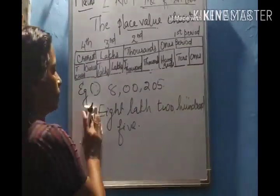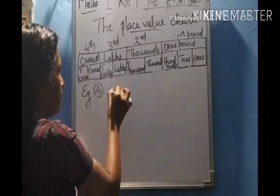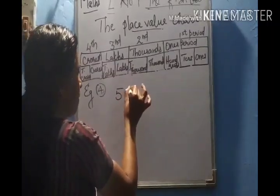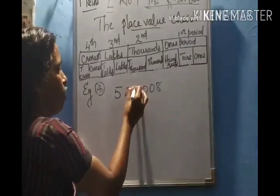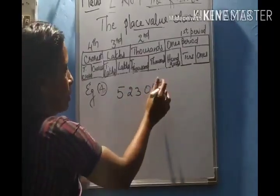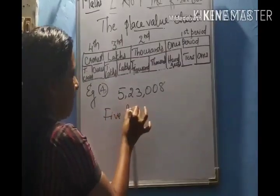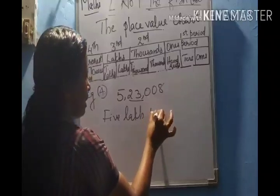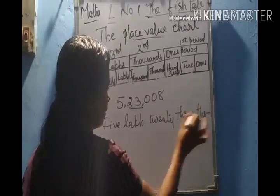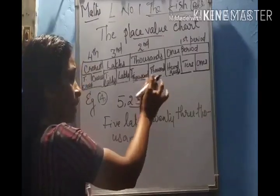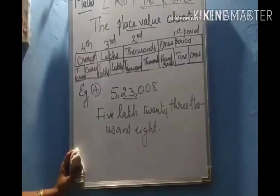Let me show you one more example. The first work will be placing the comma in the correct position. The first comma comes after three digits, then after every two digits. How many lakhs? Five lakhs. How many thousands? Twenty-three thousand. The ones period contains only eight. So this number can be read as five lakhs, twenty-three thousand, eight.